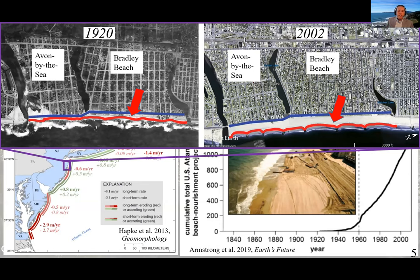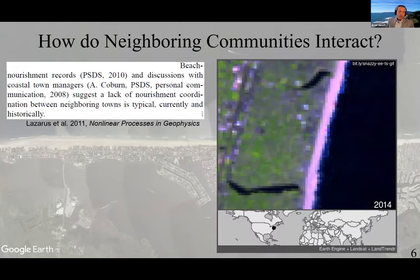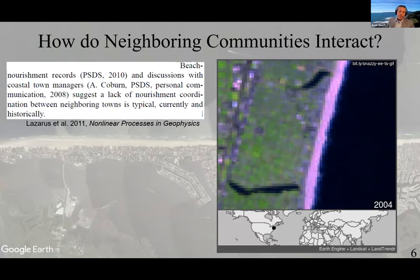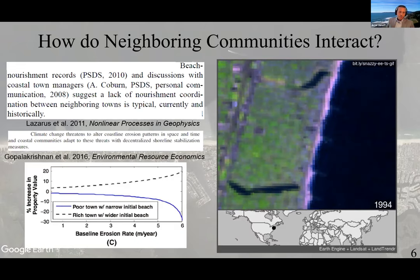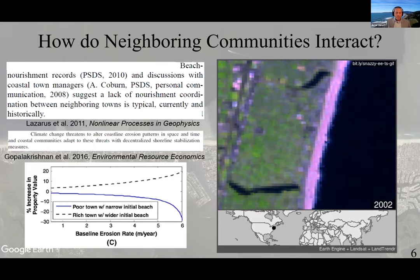So how do these intercommunity dynamics control systemic behavior? Lazarus et al. and others observed that communities have failed to coordinate in the past. But Gopalakrishnan et al. indicate that coordinated beach nourishments result in higher nourishment rates, and thus wider beaches, by eliminating the free-rider incentive, representing the economically optimal outcome. Can these behavioral feedbacks, based on management scheme, explain the beach widening we see in New Jersey and along much of the US East Coast? This question is topical given that communities may maintain decentralized policies in the future, which Gopalakrishnan et al. suggest would amplify wealth disparity due to sea level rise-induced erosion.